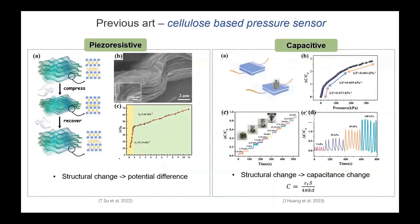In this study, we want to utilize cellulose and compatible materials for pressure sensing. Typically, there are two major working principles of pressure sensing: one is piezoresistive type, and the other is the capacitive type.